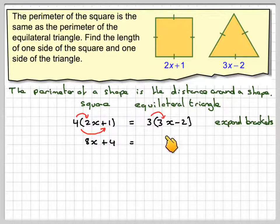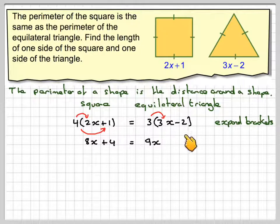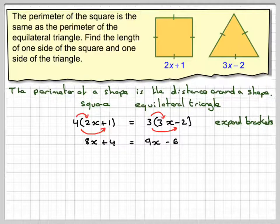That's equal to 3 times 3, which is 9x, and then 3 times minus 2, which gives me minus 6.